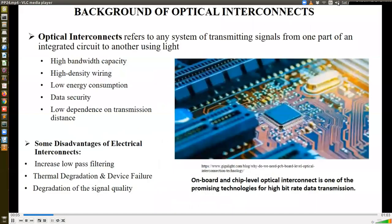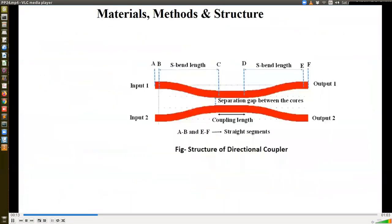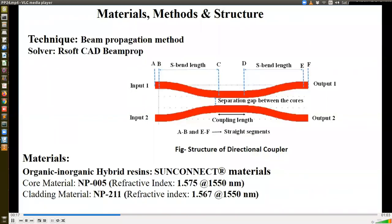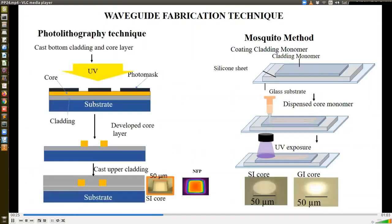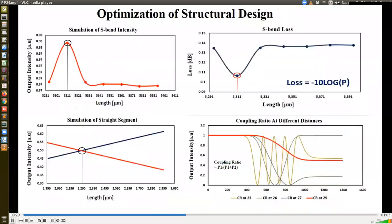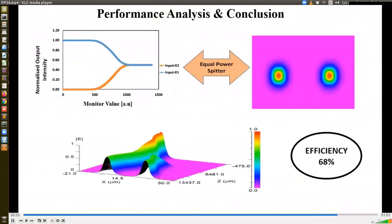Due to high bandwidth capacity and low energy consumption, optical interconnects has become a promising technology for data transmission. We have designed a directional coupler realized with organic-inorganic hybrid polymer materials by using beam propagation method technique. The fabrication method includes photolithography technique, spin coating method, etc. The structural design is optimized and for the S-bend structure, highest intensity and lowest loss is found at length 5311 micrometer. The optimized length of straight segment is 2290 micrometer. The coupling ratio at distance 29 micrometer between the two waveguides shows that the output power splits equally. So the directional coupler works as splitter and its efficiency is 68%. Thank you.